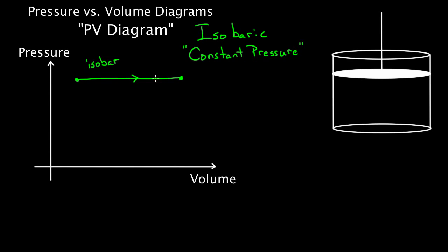So this would be an isobar for short. This is an isobaric expansion if I go to the right because I know volume's increasing. And if I go to the left it'd be an isobaric compression because volume would be decreasing. But it doesn't have to be in this particular spot. It could be anywhere on this PV diagram. Any horizontal line is gonna be an isobar, an isobaric process.